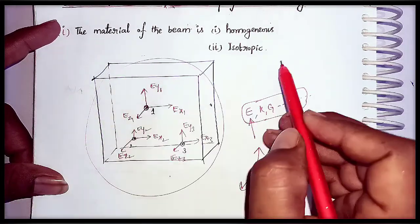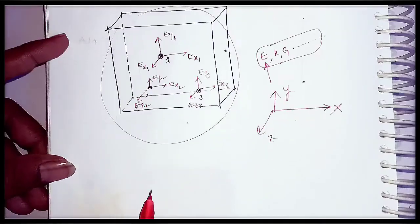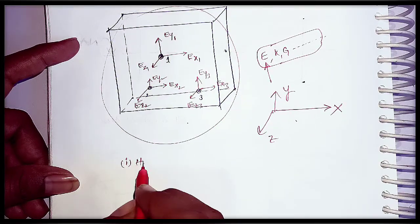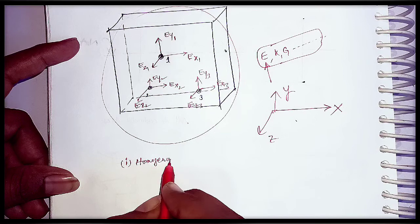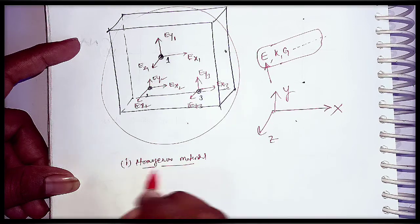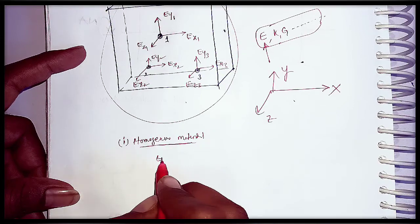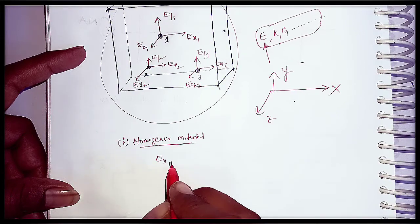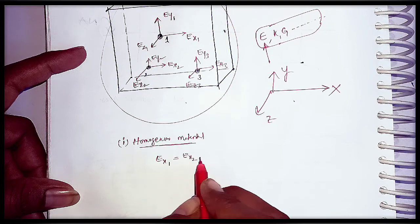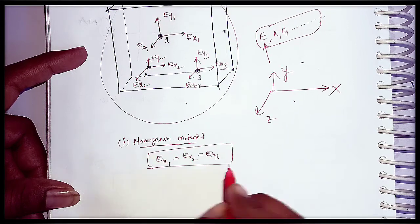To understand the concept of homogeneous and isotropic I will write the conditions. The first one is homogeneous material. For homogeneous material, the condition is Ex1 = Ex2 = Ex3.